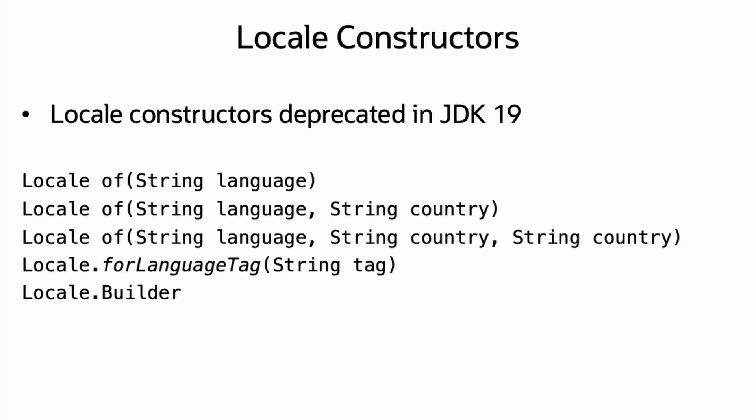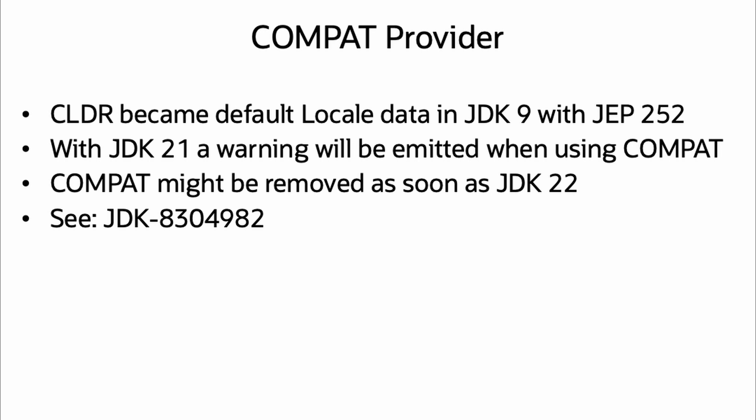The constructors for the Locale class were deprecated in JDK 19. Instead, use the static methods of, or forLanguageTag, or use the builder. These factory methods validate the values provided and don't create duplicate locale instances, which should result in faster cache lookups.